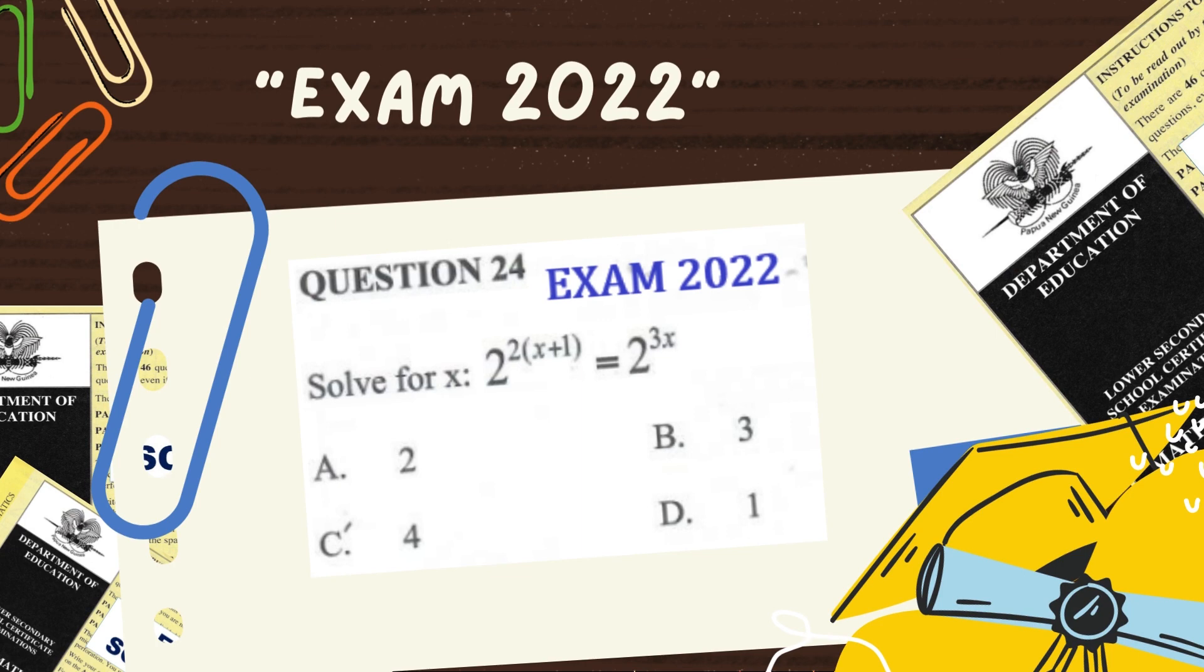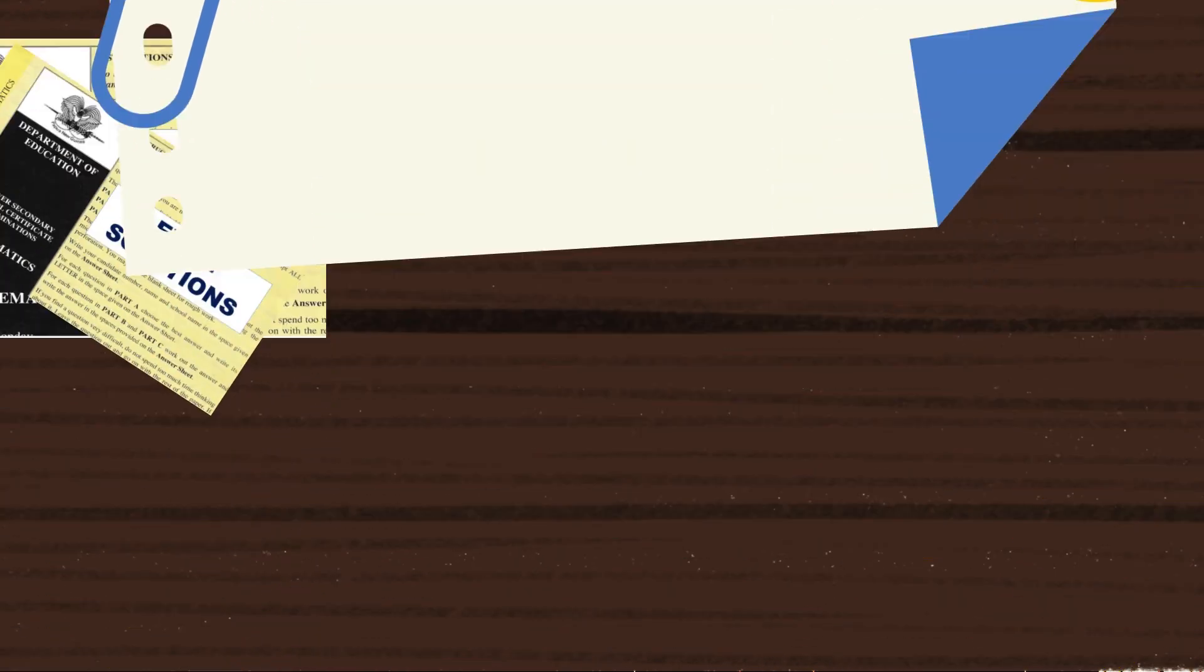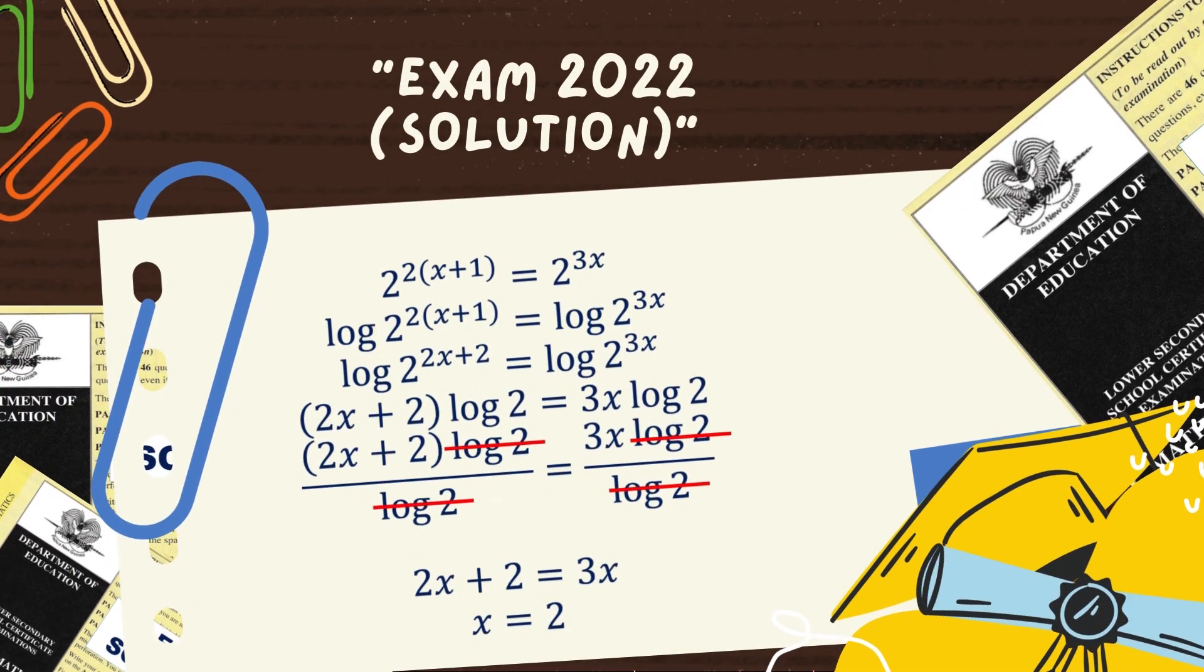At most times, students were taught that if bases on two sides of the equations are equal, the powers should be equal as well. And so, they equate the powers to solve for the unknown using algebraic methods. Well, that method is true and this is proven by applying log on both sides of the equation.